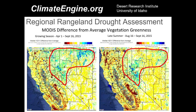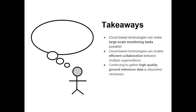My key takeaways are that cloud technologies are really allowing these large-scale monitoring practices. The ability to put stuff in one place in the cloud allows collaboration from a technological perspective — you can share analysis just by sharing a web address. And this does not take away from the need to collect high-quality data on the ground. It actually makes it even more important that people in the field are getting high-quality reference data so it can be used to interpret what's being remotely sensed.